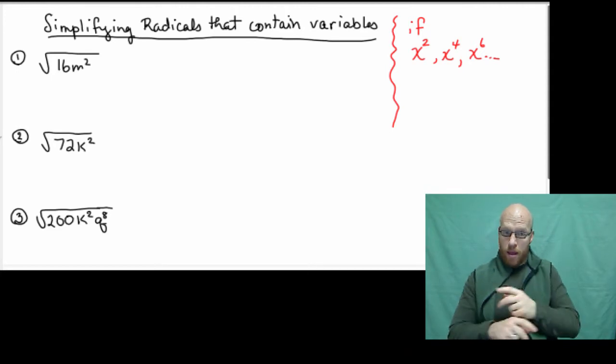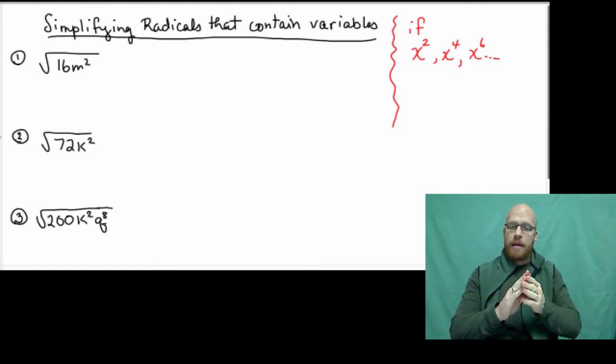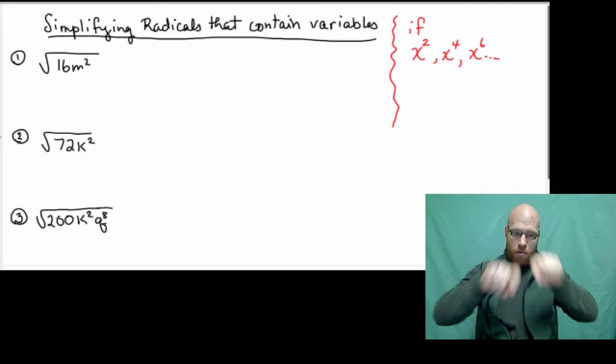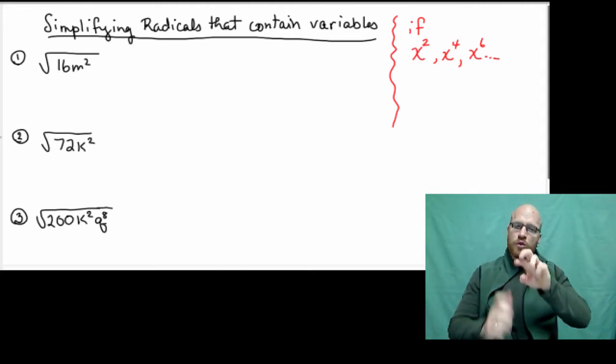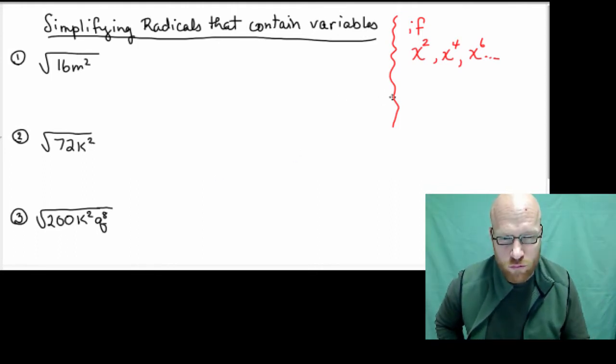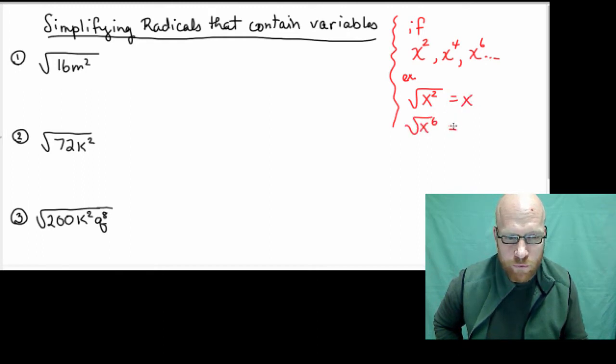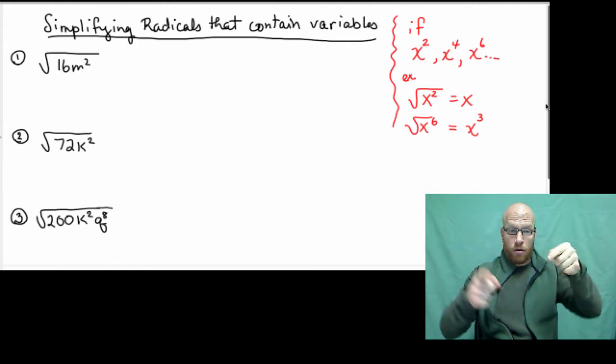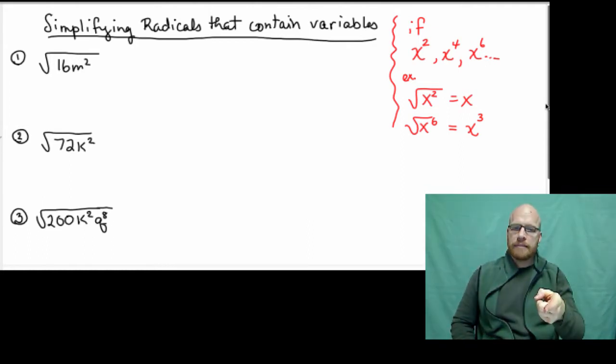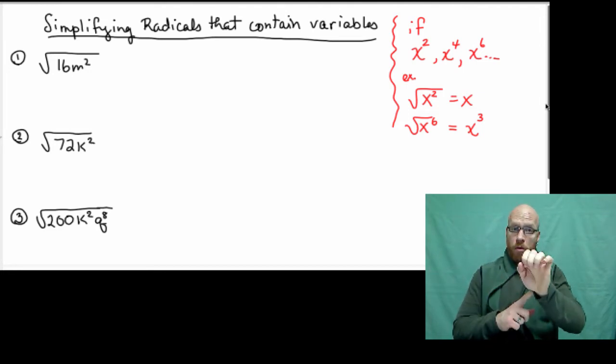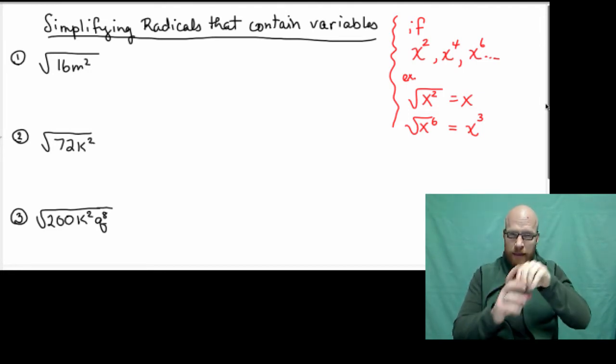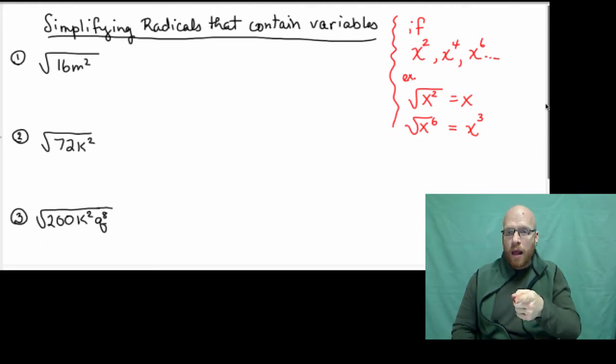Remember how when we multiplied like bases with the variables, we added the exponents, like bases with exponents? We added like x to the first times x to the first equals x squared. That means x squared has a square root. So really, like x third squared would be x to the sixth. So when you have variables, you'll find if they have perfect squares or not.